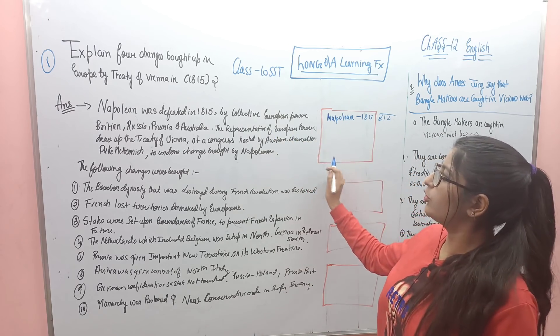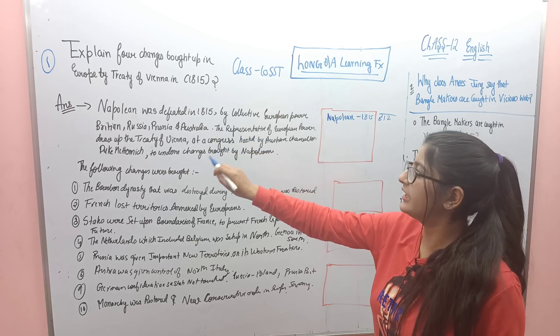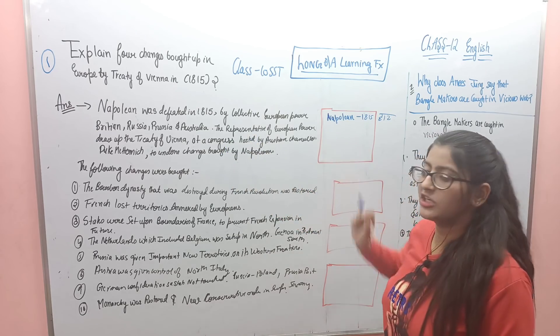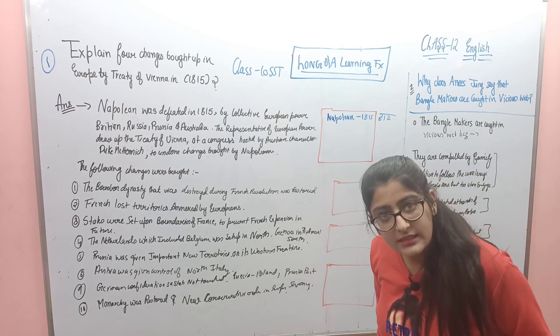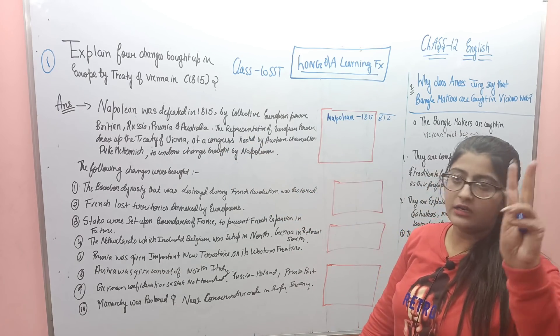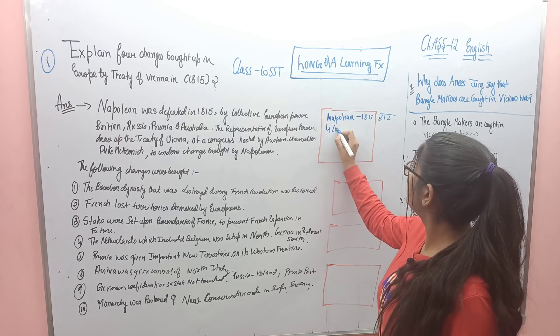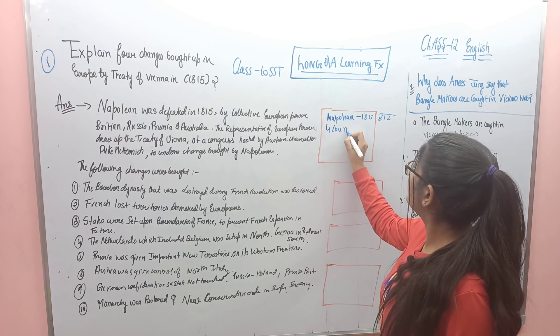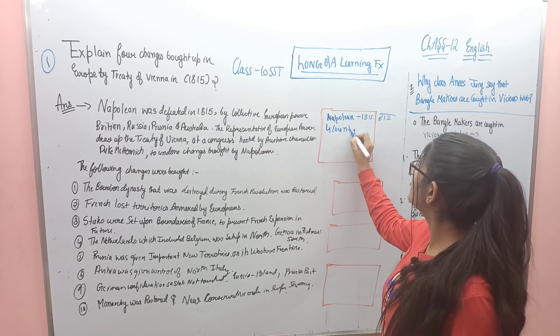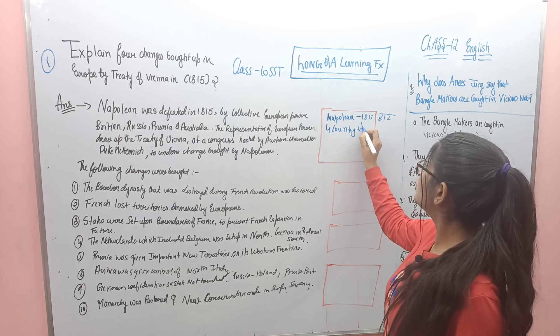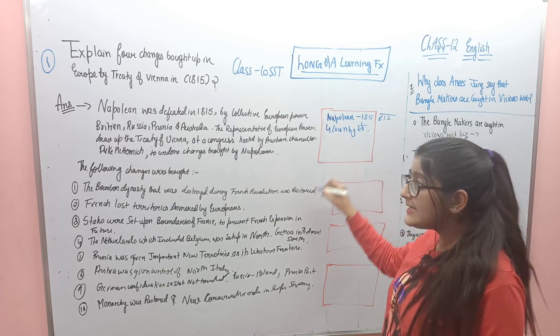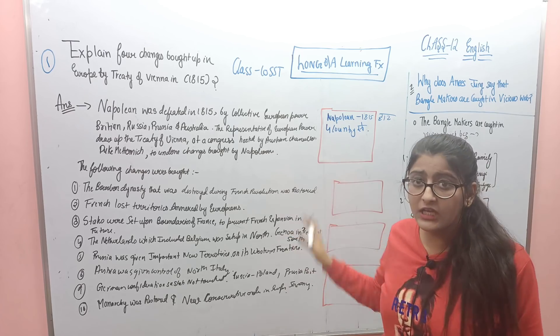By collective European power — Britain, Russia, Prussia, Austria — who did what? Four countries drew up the treaty. You can make this in Hindi and put the keywords in English. The abbreviation B-P-R-A, you can learn these four countries easily.